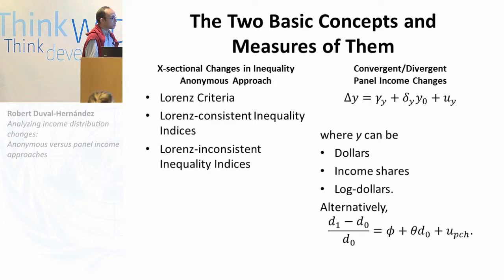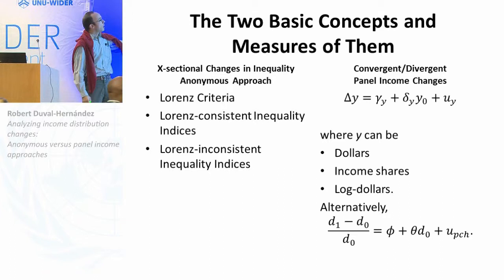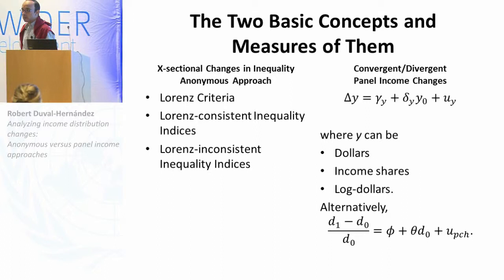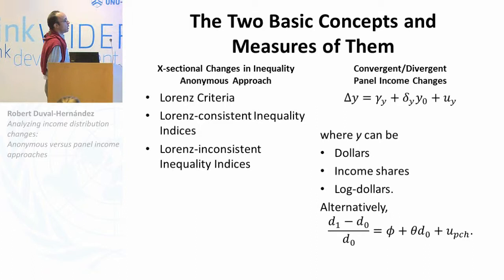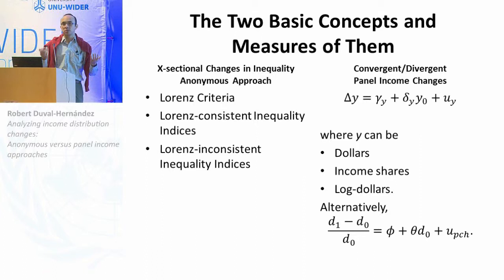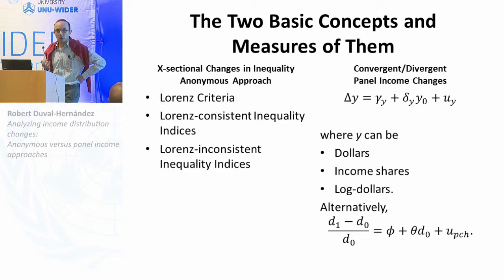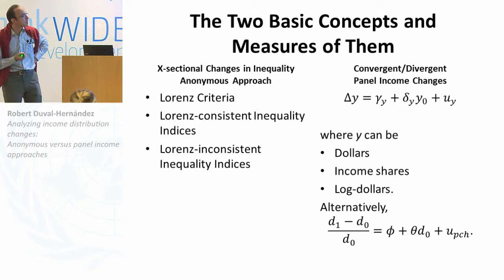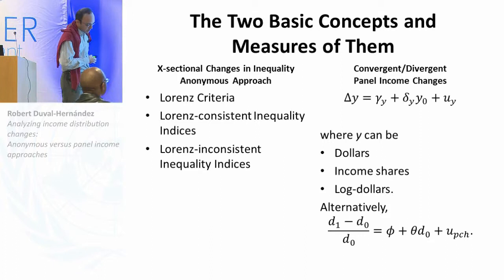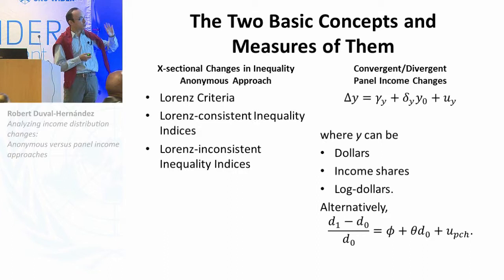What we mean by the anonymous approach is just comparing inequality at two different cross-sections at different points in time. We begin by looking at the Lorenz criteria; if there is Lorenz dominance, that is the least controversial way of assessing inequality. You could use a Lorenz-consistent inequality index, or in the case of Lorenz crossings, use a Lorenz-inconsistent index like the variance of log incomes, which is sometimes handy in certain statistical contexts. By the panel approach, there are several ways to measure economic mobility, and there is a long literature on what economic mobility even means.